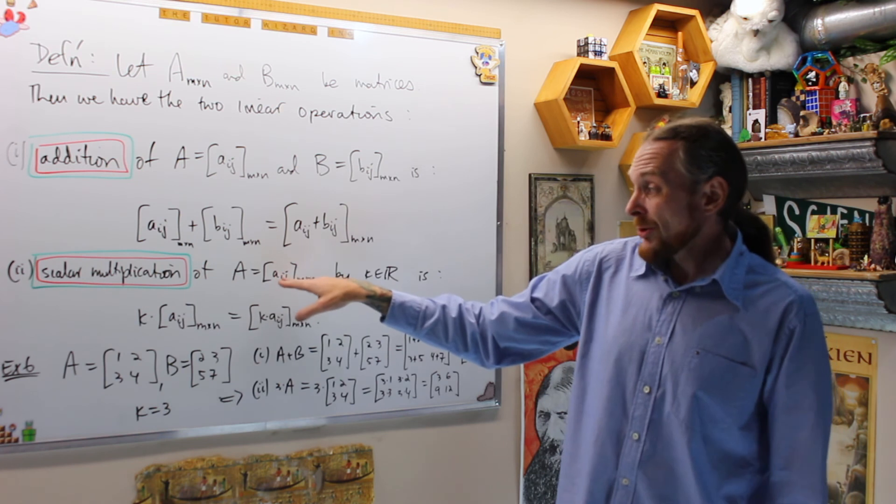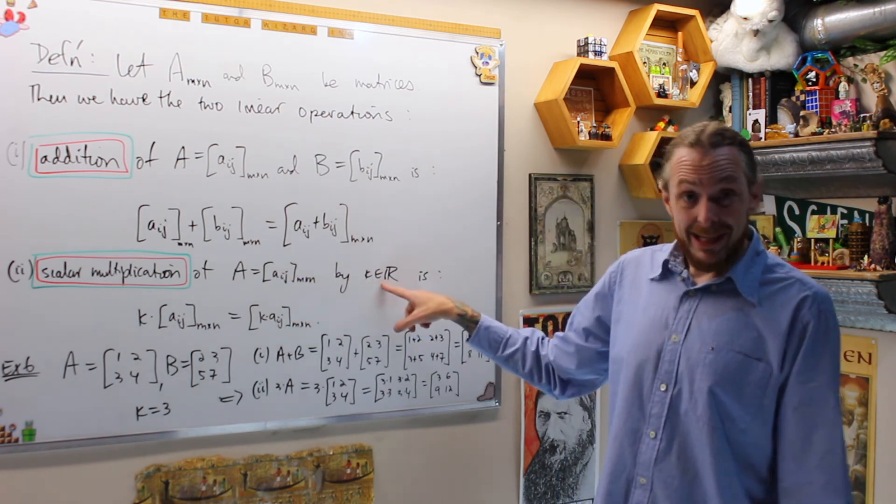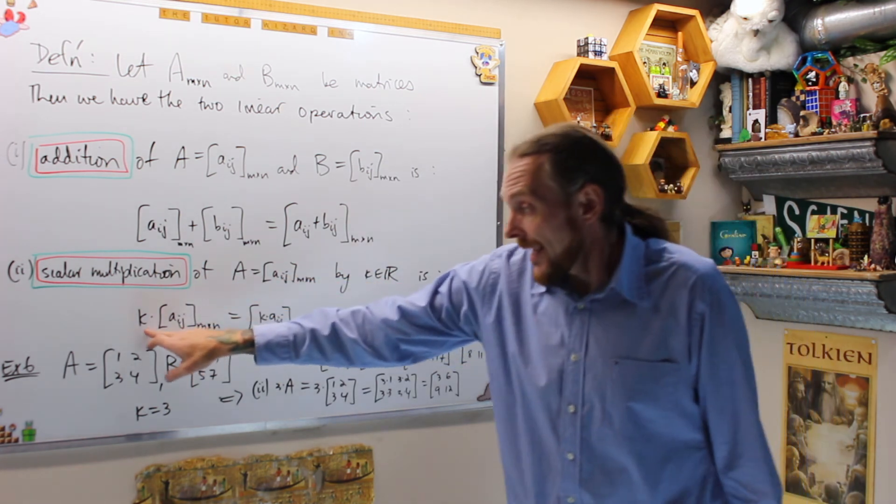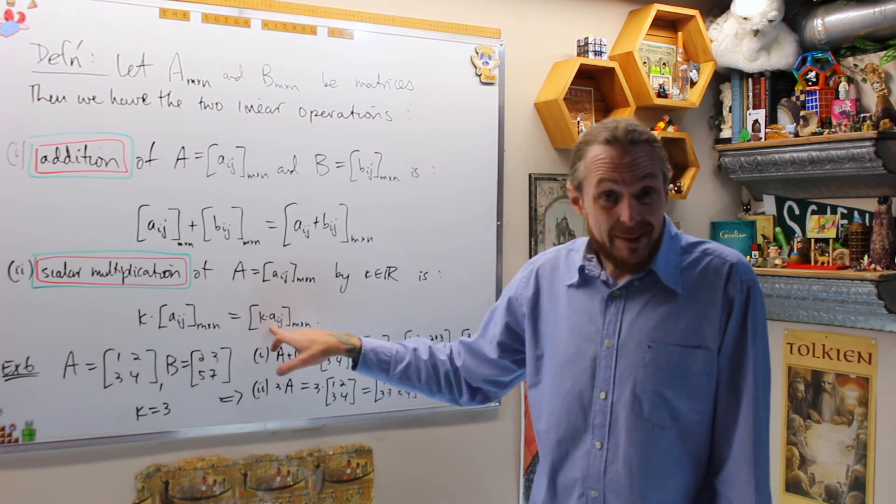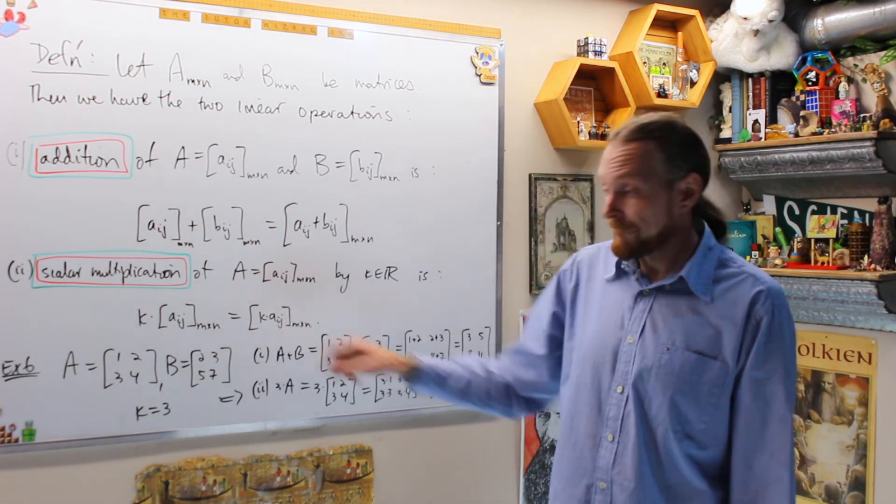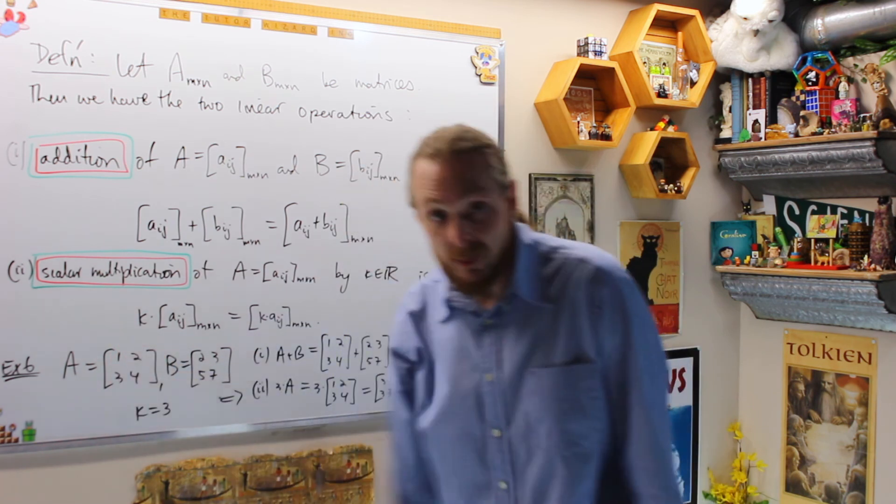Scalar multiplication of a matrix A by a real number K is K times that matrix is K times every component or entry of the matrix.